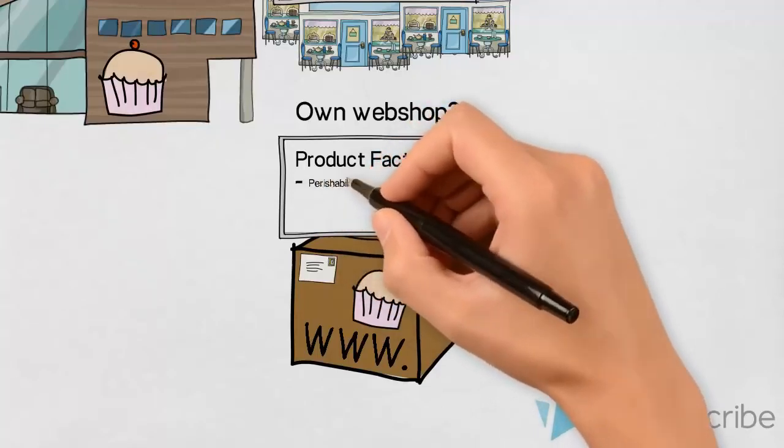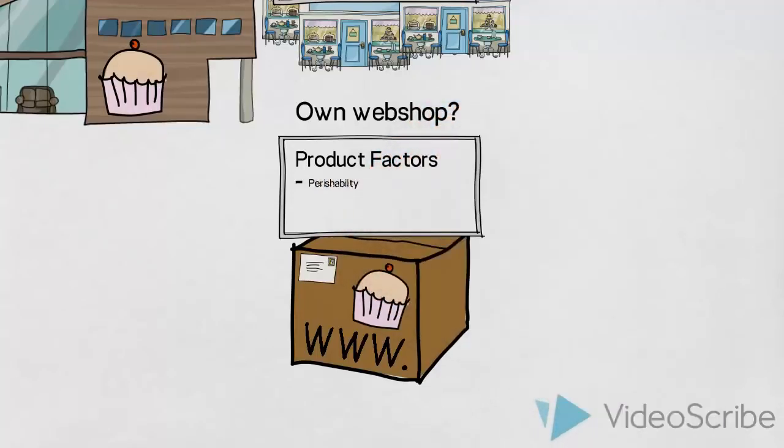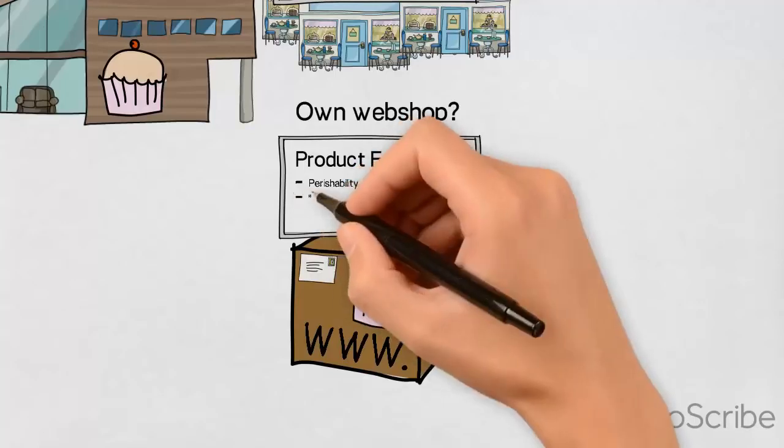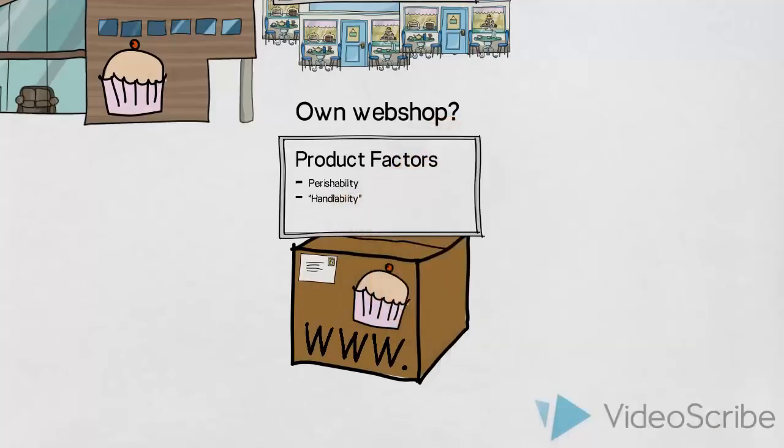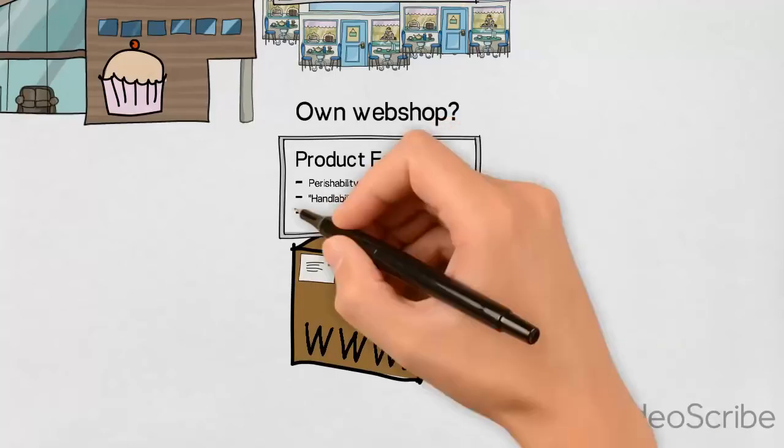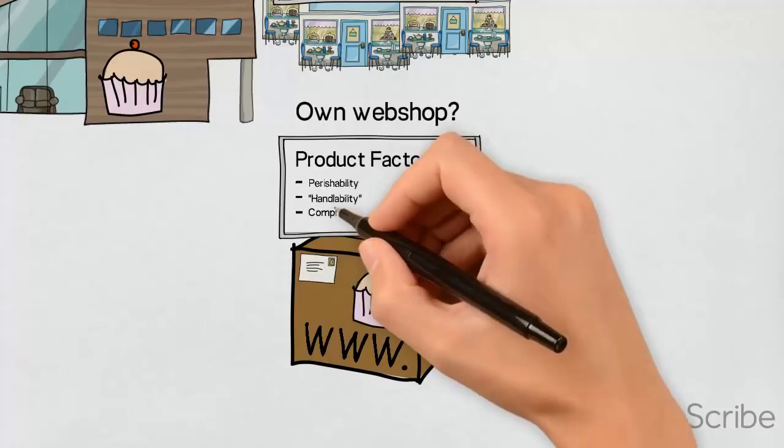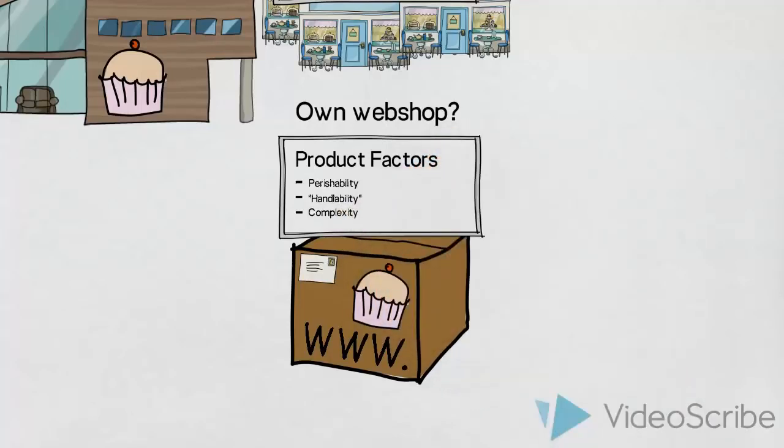Firstly, does the perishability—the fairly short shelf life of a cake or dessert—suit this type of distribution? Would they be able to deliver the product while it's still edible? Would there be ways of overcoming this obstacle? Secondly, are cakes and desserts suitable for handling in this way? And thirdly, with other types of products, complexity could be an issue. So our recommendation for this company would, in addition to the factors already discussed, also depend on the answers to the questions about the actual products.